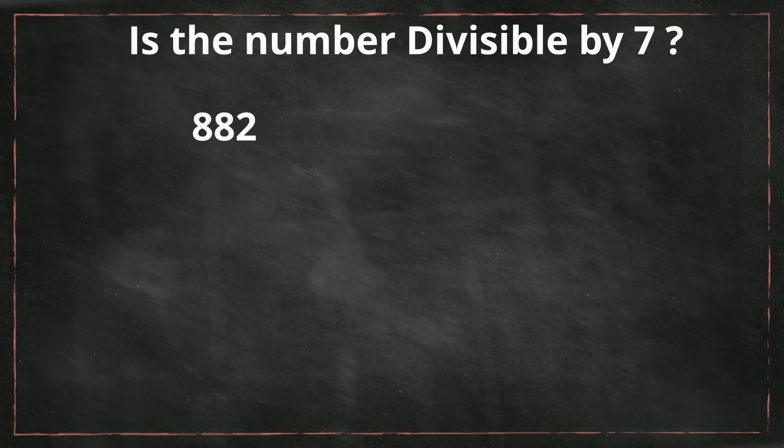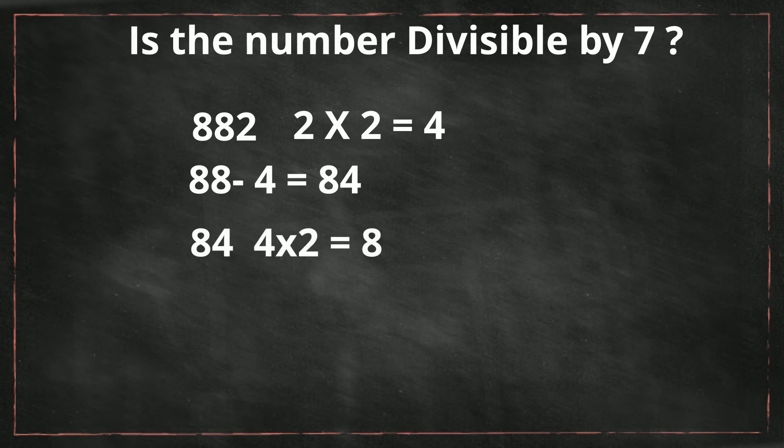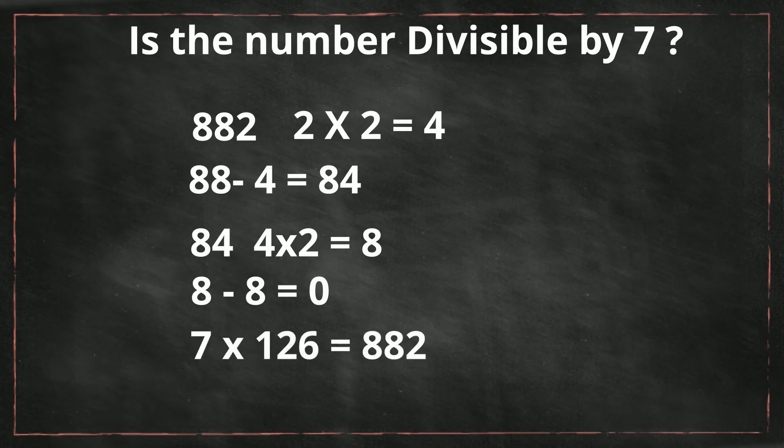How about 882? I'm going to multiply 2 times 2, which gives me 4. 88 is the remaining number. 88 minus 4 gives me 84. I don't know about 84, so I'm just going to repeat: 4 times 2 is 8, 8 minus 8 is 0. So the entire number is divisible by 7, and 7 goes into 882 126 times.